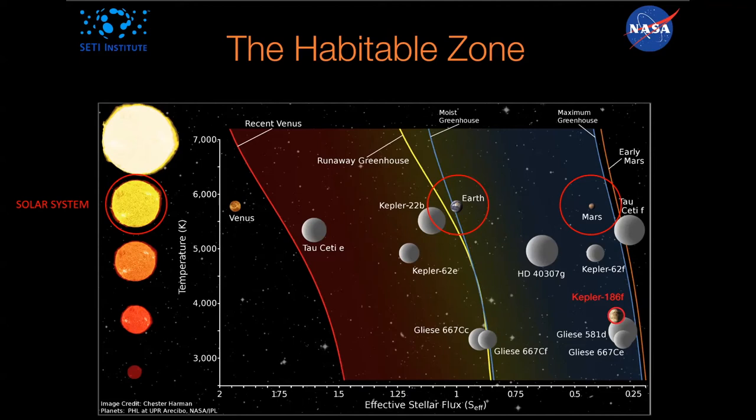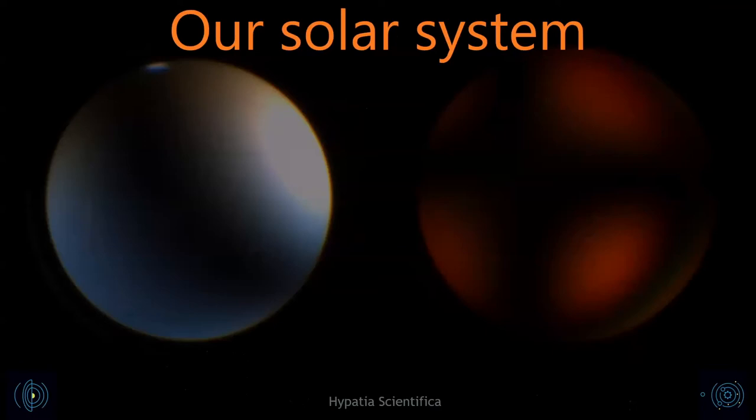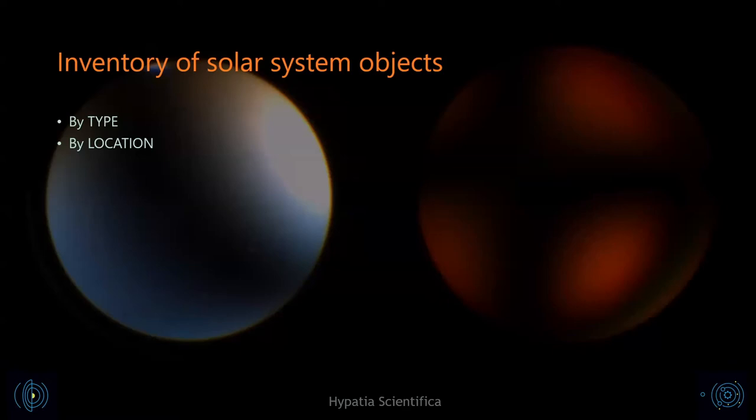Studying Mars, other planets, and now extra-solar systems, we know that astronomical factors are just one component of what makes a habitable zone, and geology is as important as astronomy. Comparative planetology matters. Let's look at how we distinguish objects in our solar system. Astronomy, like geology, is based on classification — we classify solar system objects by type or by location.